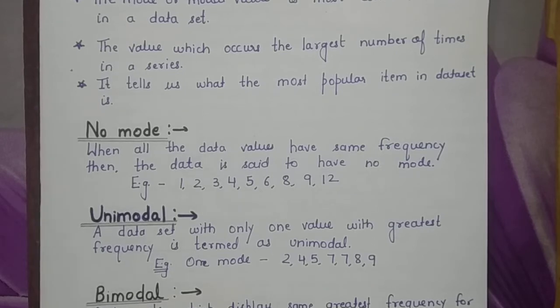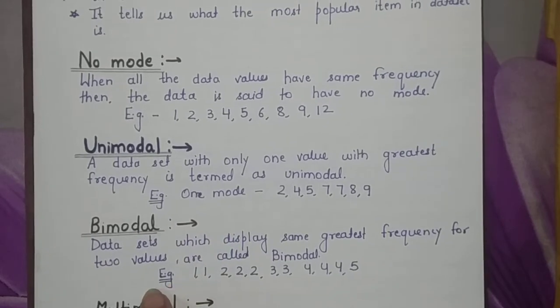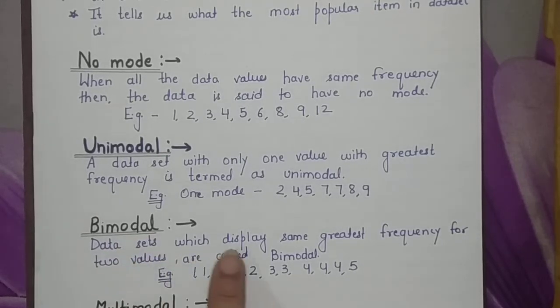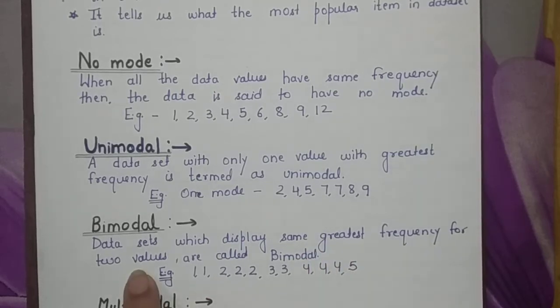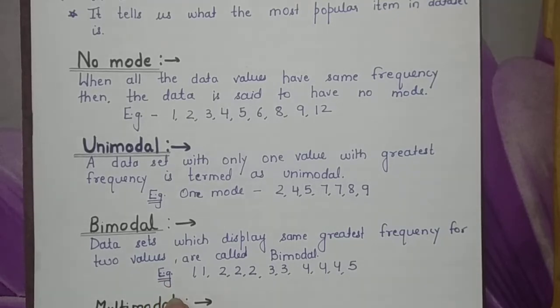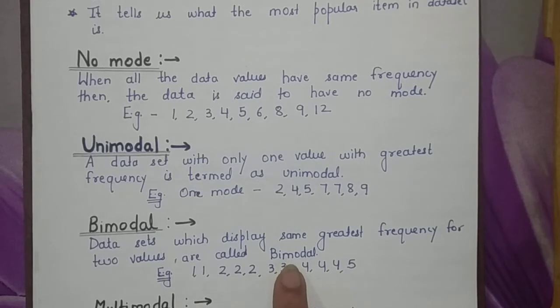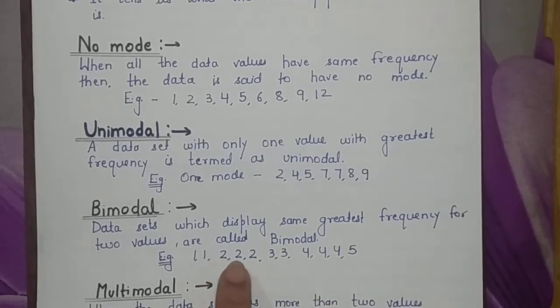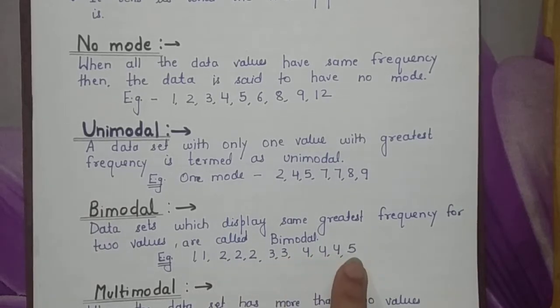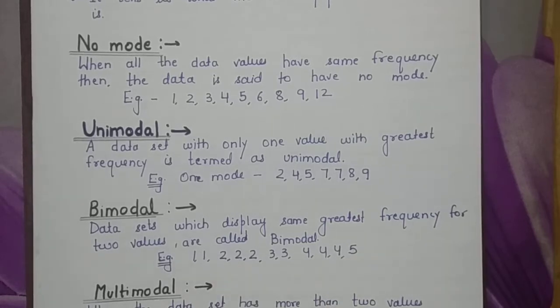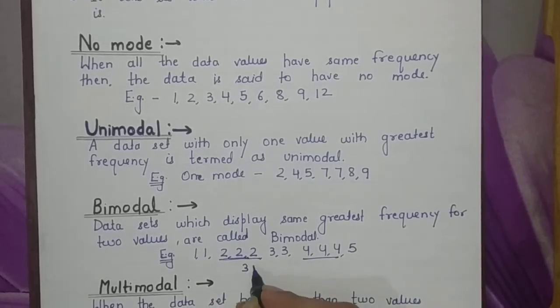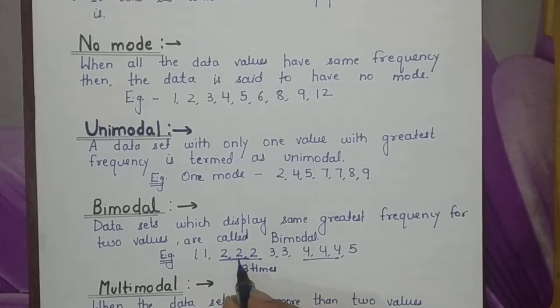Bimodal means two. The data set which displays same greatest frequency for two values is called bimodal. For example: 1, 1 occurs two times; 2, 2, 2 occurs three times; 3, 3 occurs two times; 4, 4, 4 occurs three times; and 5 occurs only one time. So two and four both occur three times total, so this series has two modes: 2 and 4.